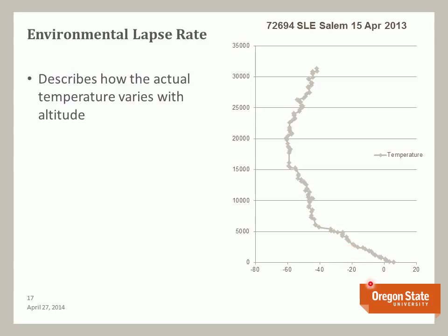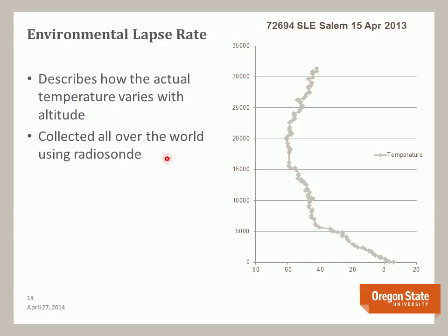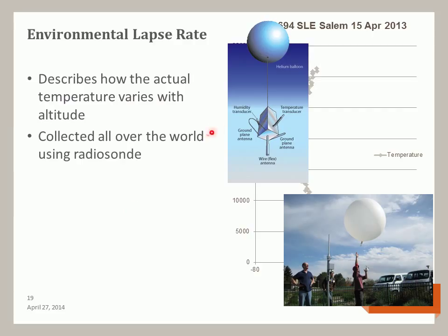Above the tropopause, there is another relatively constant temperature until you reach a point where the atmosphere begins to warm due to reactions between light and oxygen molecules that release energy. Note that it doesn't take very long for the temperature to be downright cold — minus 20 degrees at about 2,500 meters. These data are collected twice per day from locations all over the world using what is called a radiosonde, which is connected to a balloon. Here is a sketch of a radiosonde, which collects temperature and humidity data as well as altitude data using a GPS, and here is a photograph of a radiosonde being launched from various locations across the world.